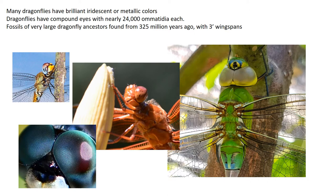One of the reasons we love dragonflies is because they're so beautiful, with brilliant iridescent metallic colors and those big eyes. Those big eyes are composed of up to about 24,000 ommatidia — the facets you can see in the image — and each one of those facets operates like an independent eye, sending visual information back to the brain. That's why they can spot a gnat or a fly 100 feet away and zoom over to intercept it.